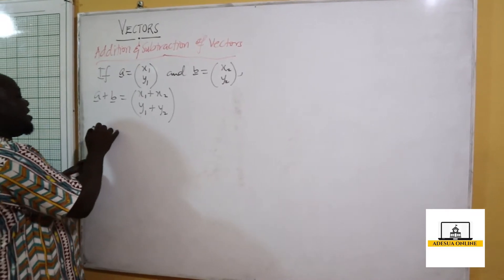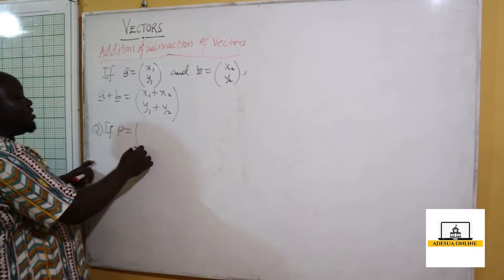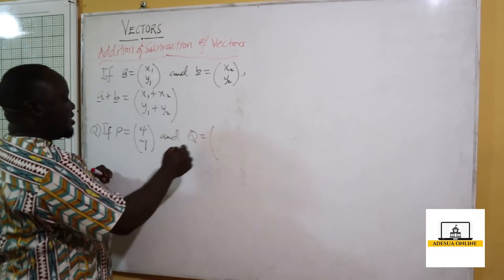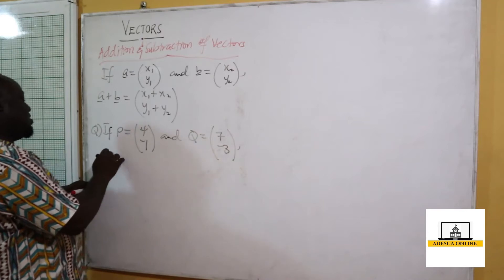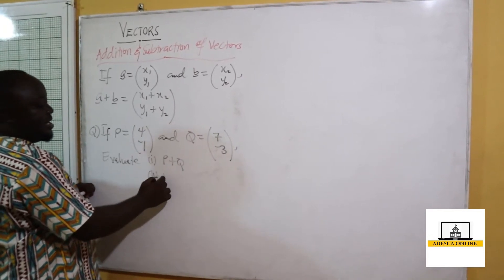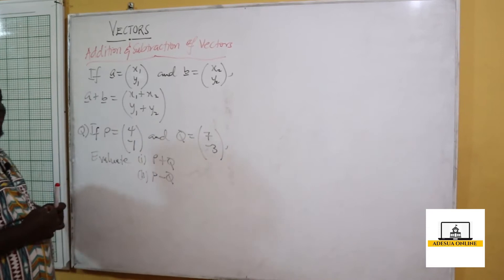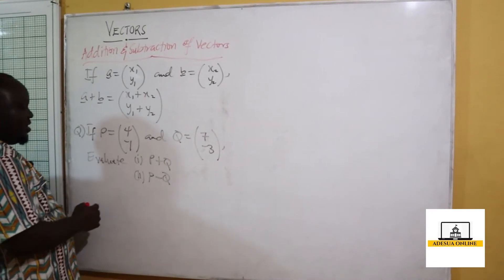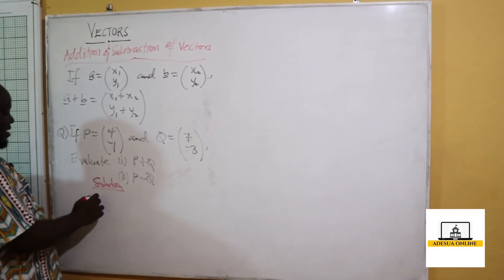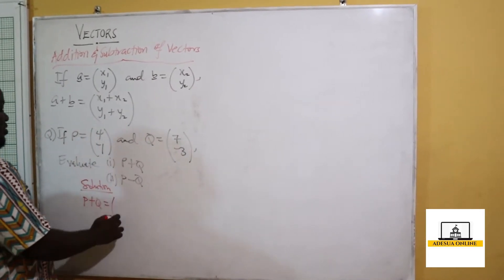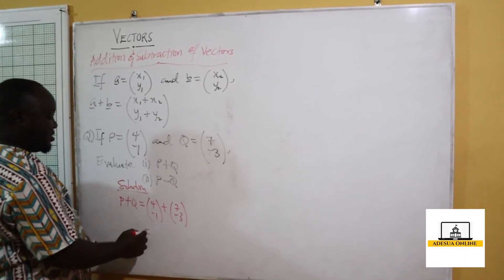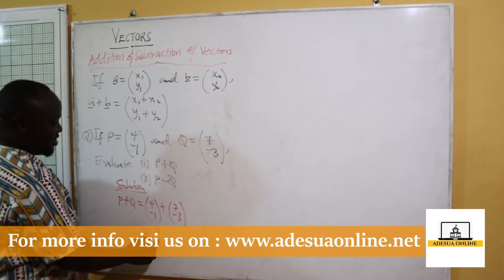For example, if p is equal to (4, -1) and q is equal to (7, -3), evaluate: (i) p plus q and (ii) p minus q. For p plus q, we have (4, -1) plus (7, -3), which gives us 4 plus 7 equals 11, and negative 1 plus negative 3 equals negative 4.